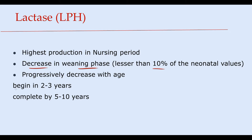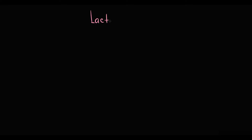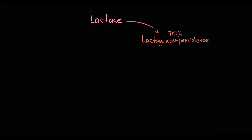This process happens in almost all mammals, including most humans. In the large majority of humans, lactase expression begins to decrease very early. Typically, this progressive decrease in lactase gene expression begins at 2–3 years of age and is generally complete by 5–10 years. This progressive decrease in lactase activity throughout life is called lactase non-persistence.